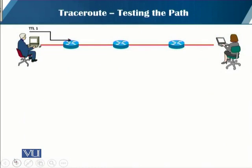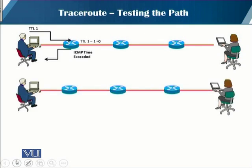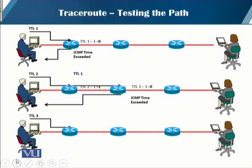When you execute the traceroute command, the application sends a packet with the TTL field set to 1 — TTL means time to live. When it is received by the first-hop router, that router decrements the TTL field to zero and sends back an ICMP time-exceeded message to the source. The source then knows the round-trip time to the first hop. It then sends another packet with TTL set to 2, and the second-hop router replies with an ICMP time-exceeded error. This way the sender knows how long it takes to reach two hops. It continues sending packets with increasing TTL values until it reaches the destination.